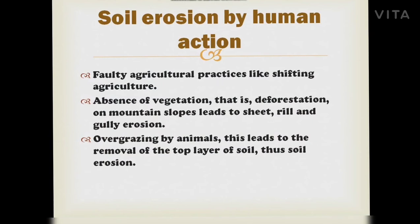Soil erosion by human action: faulty agricultural practices like shifting agriculture and absence of vegetation (deforestation) on mountain slopes leads to sheet, rill, and gully erosion. Overgrazing by animals leads to removal of the top layer of the soil, causing soil erosion.